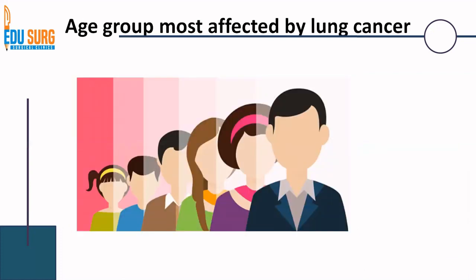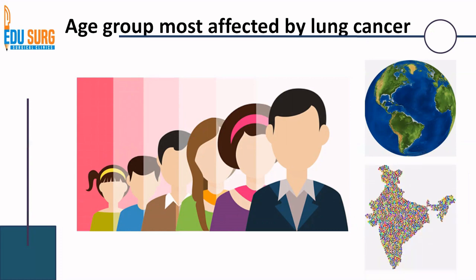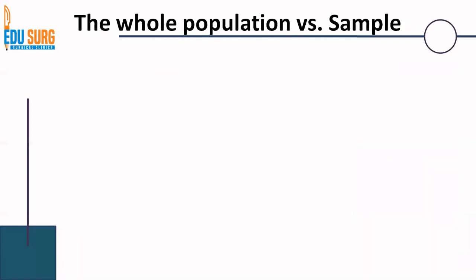Suppose we want to identify the most common age group affected by lung cancer — is it the pediatric age group, the middle age group, or the adult age group? We can identify this in the world, or if we are in India and want to study a drug on lung cancer or a prevention program, we can do the same study in India. But again, the population of India is huge and this is going to be a very difficult task.